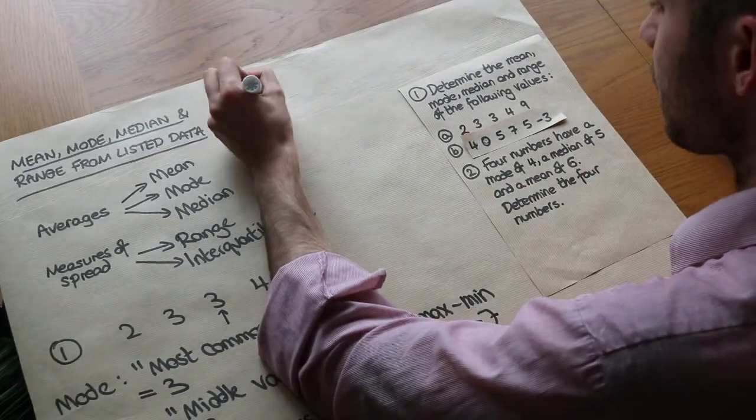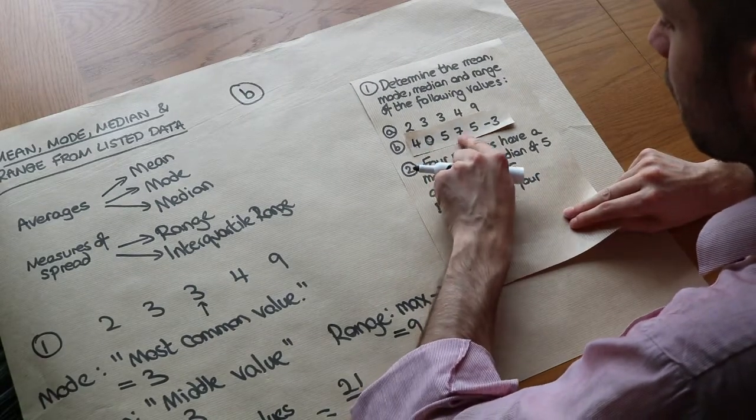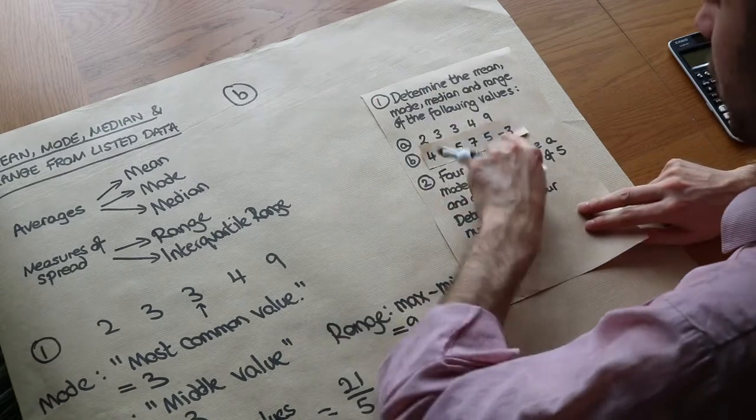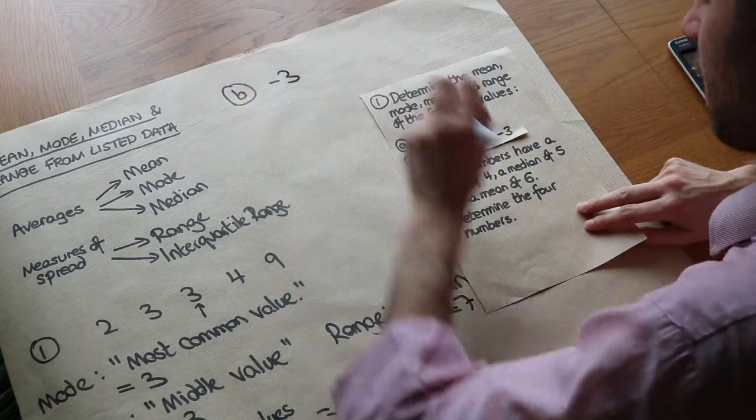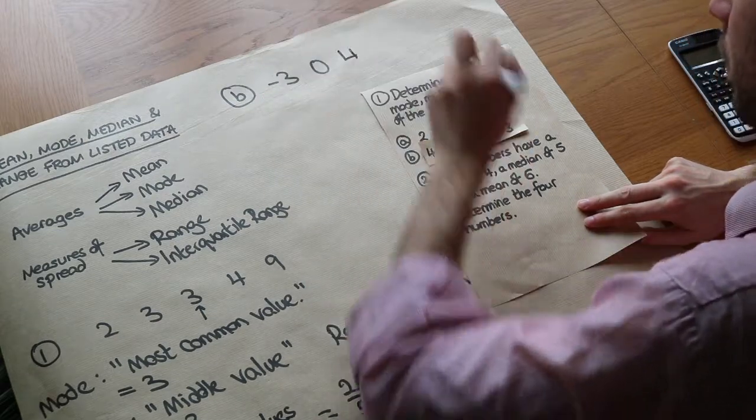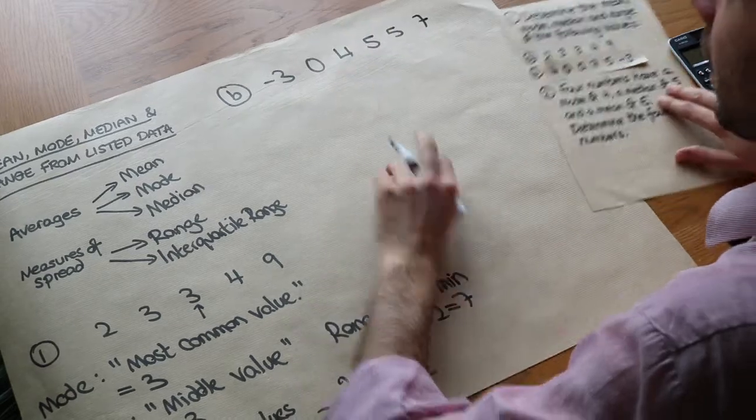Right, let's do B. This time the values are not in ascending order. We've got 4, 0, 5, 7, 5, minus 3. So let's put them in ascending order first. Negative 3 is the smallest, then we've got 0, then 4, then 5 twice, and then 7.